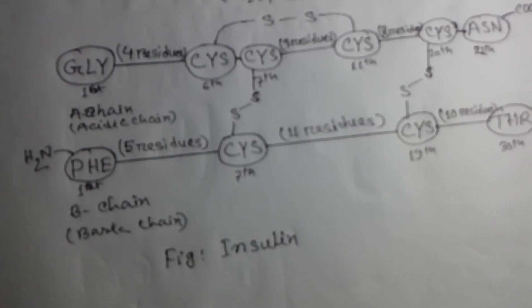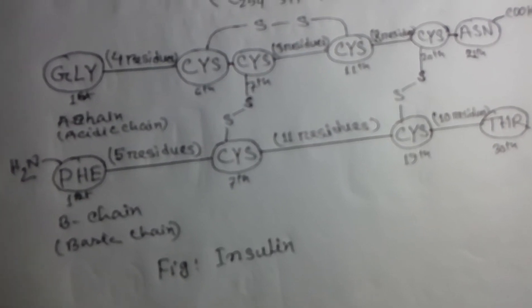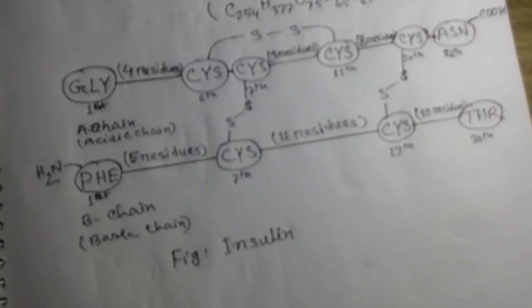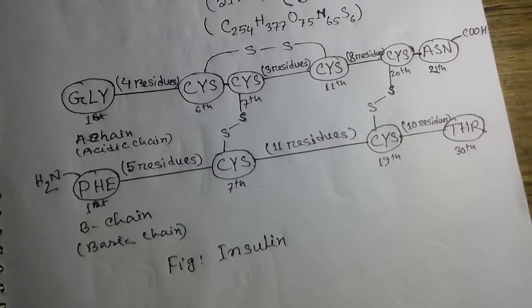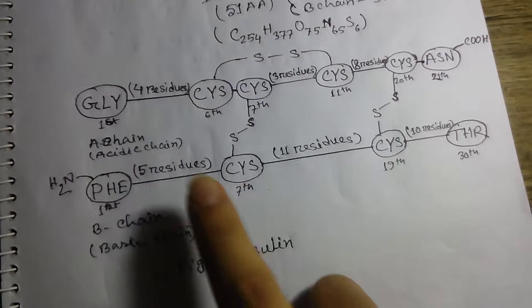Today we will discuss the insulin structure. The insulin structure contains 51 amino acids in two chains: A chain and B chain.